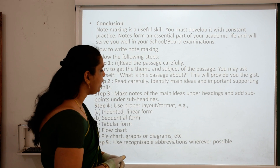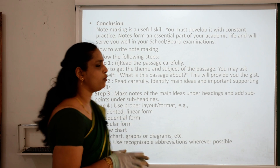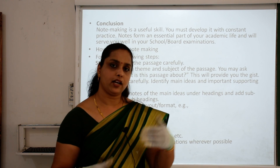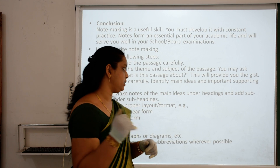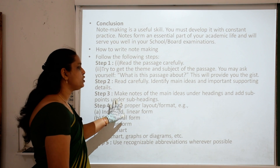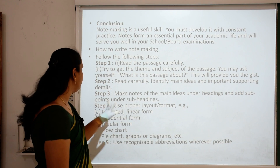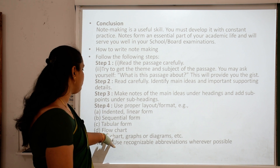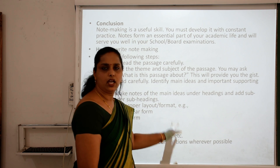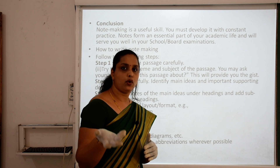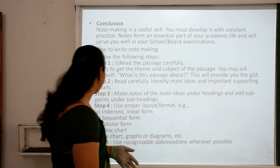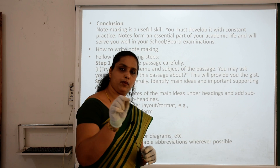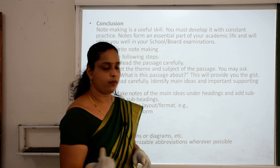Step 2: read it carefully and identify main ideas and important supporting details. While reading each paragraph, identify what is important. Step 3: make notes of the main ideas under heading and add points under subheading. Step 4: use a proper layout format — that is indented form, linear form, sequential form, tabular form, flow chart, pie chart, graph, or diagram — according to your own preference. Step 5: use recognizable abbreviations wherever possible, changing those things into abbreviation form.